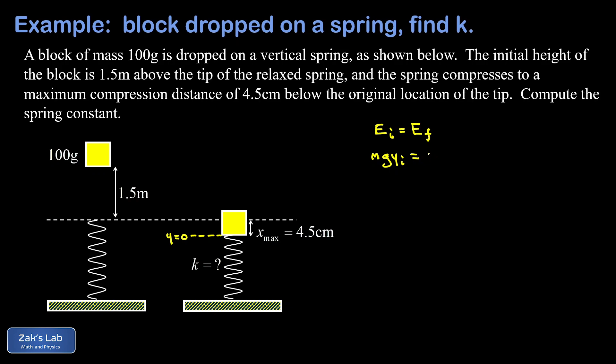The only energy in the final state is just my spring potential energy, one half k x max squared. This is really quick. I can just solve for k now. I'm going to do this symbolically first. I multiply both sides by two, I divide by x max squared, and k is 2 mg y initial divided by x max squared. Then we just sub in all the numbers.